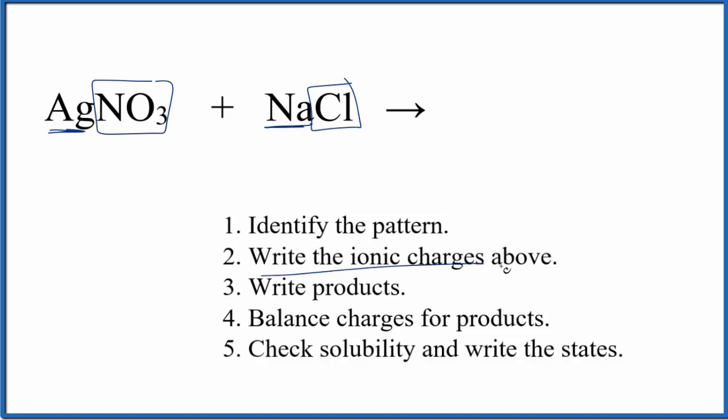It's helpful if we write the charges, the ionic charges, above each substance. So silver that's always one plus. For the nitrate ion here this is a polyatomic ion. So you either memorize it or if you're allowed you look it up. The whole nitrate ion is one minus.